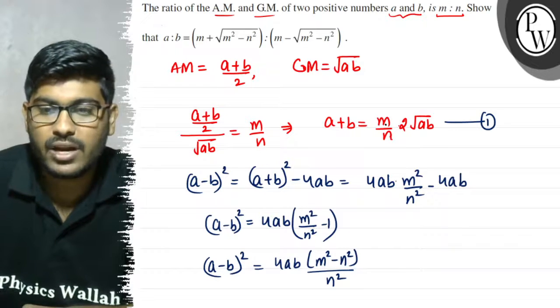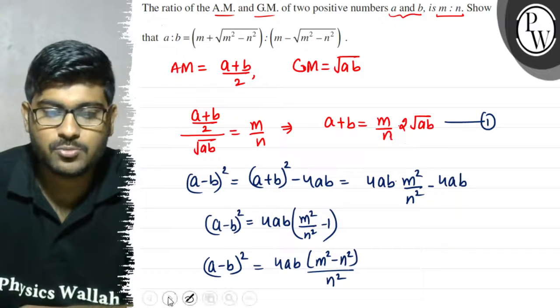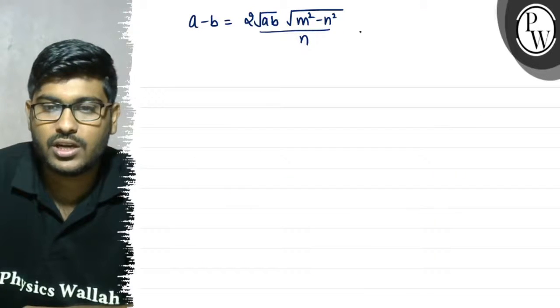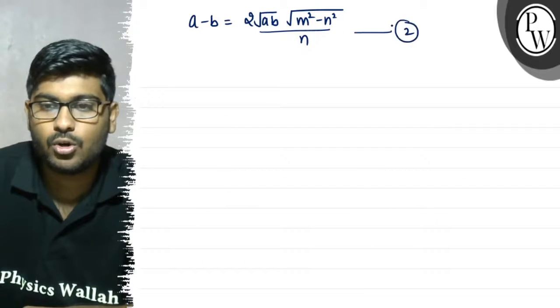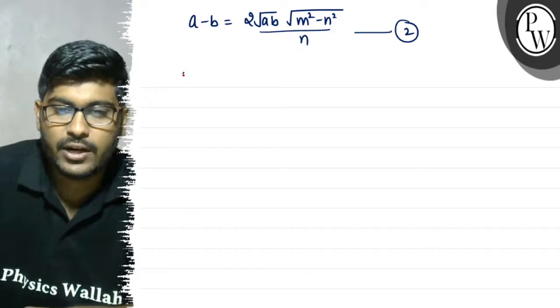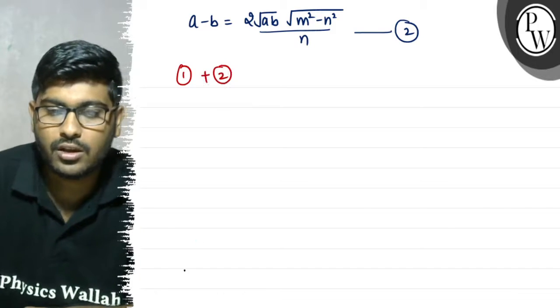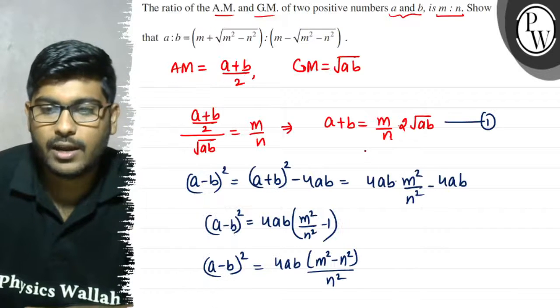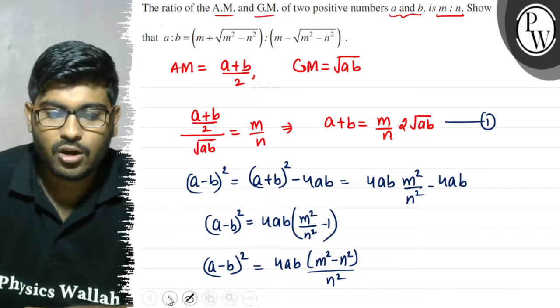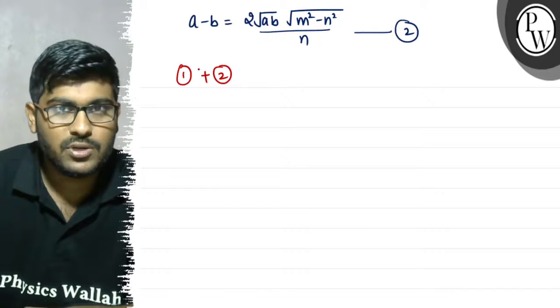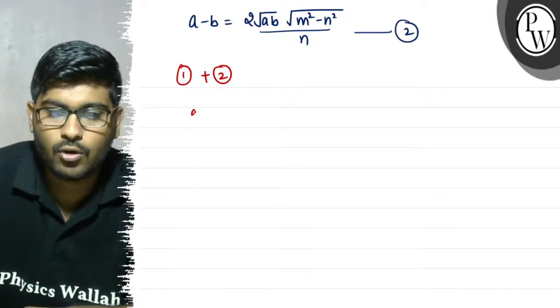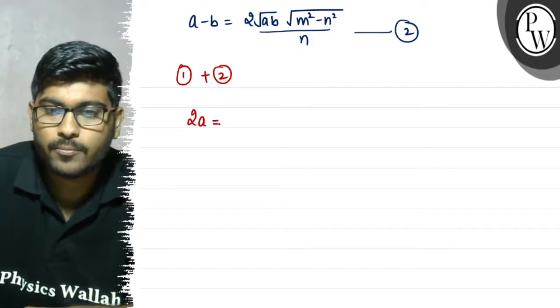4ab is equal to 4m² over n² times ab, giving (a - b) whole square equals 4ab times (m² - n²) over n². This is (a - b) whole square. We have to write a minus b. Now, if we add equation 1 and equation 2, we get either a plus b or a minus b, and overall this gives us 2a.